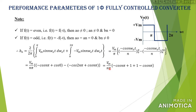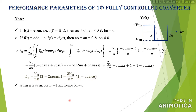We can write it as (Vm/nπ)[−cos(nπ) + 1 + 1 − cos(nπ)], which on further simplification gives 2Vm/nπ × (2 − 2cos(nπ)), or 2Vm/nπ × (1 − cos(nπ)). If n is even (2, 4, 6, etc.), then cos(nπ) = 1 and bₙ = 0. If n is odd, then cos(nπ) = −1, and hence bₙ = 4Vm/nπ, because 1 − (−1) = 2, giving 4Vm/nπ.